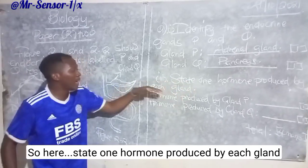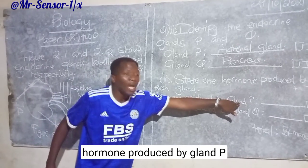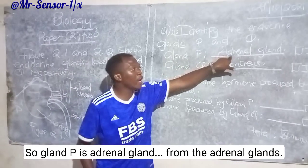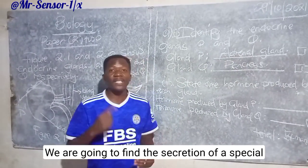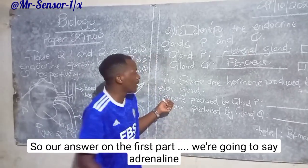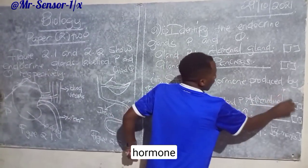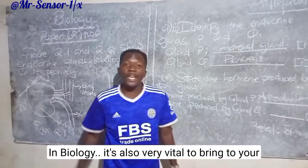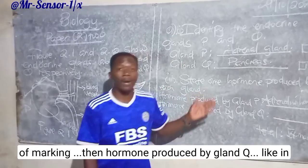Step one: hormone produced by each gland. Hormone produced by gland P — we are in reference to the first stated answers, so gland P is the adrenal gland. From the adrenal glands we are going to find the secretion of a special hormone called adrenaline. So our answer on this first part is: adrenaline hormone. In biology it is also very vital to note that spellings play a vital role in terms of marking.